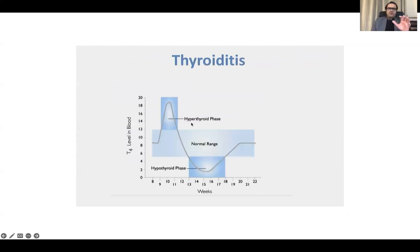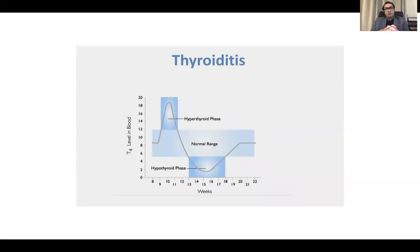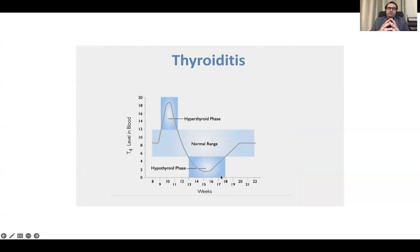In thyroiditis, there is destruction of the thyroid gland initially due to an inflammatory insult — it may be subacute thyroiditis due to a post-viral cause or autoimmune chronic lymphocytic thyroiditis. Initially there will be a thyrotoxic phase with hyperthyroid symptoms, then a hypothyroid phase. This hypothyroid phase may last four to six months, and eventually most of these patients become euthyroid.